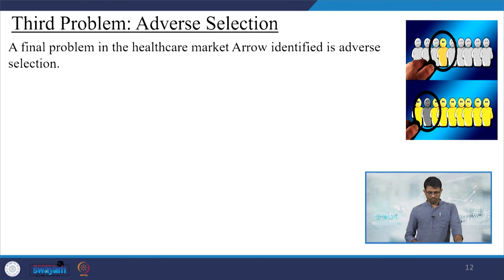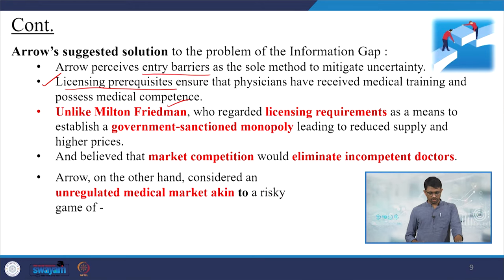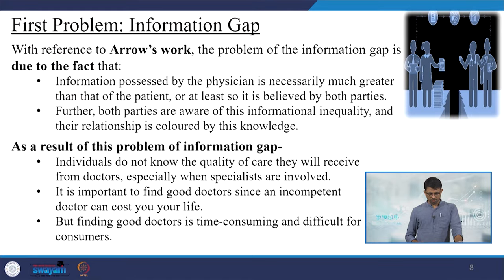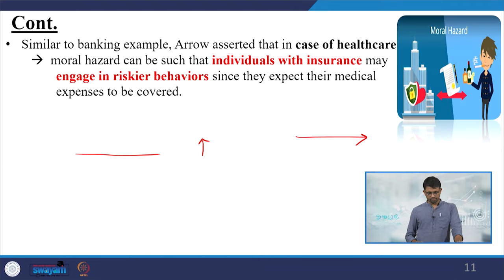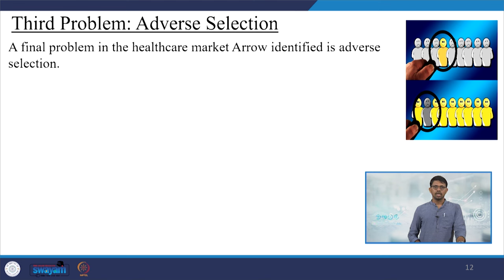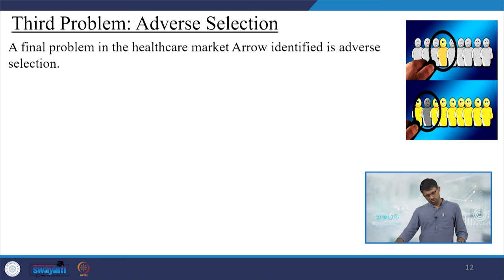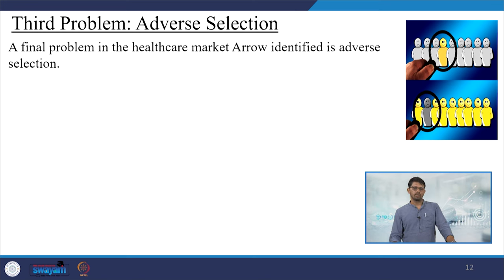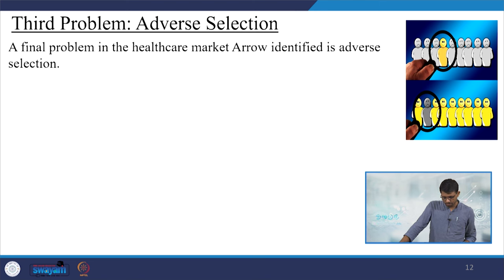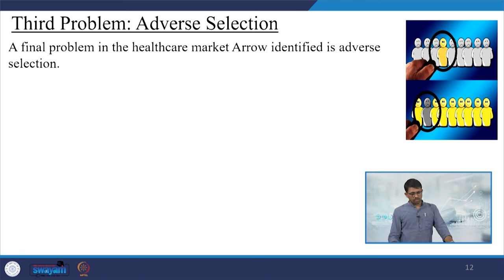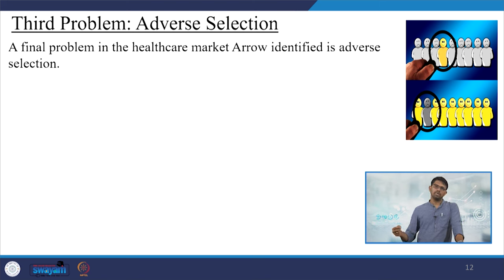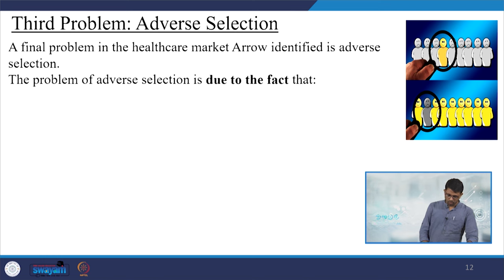The third problem Arrow identified — after information gap and moral hazard — is called adverse selection. Adverse selection, moral hazard, and information gap are all connected. Market failure, which is explained in various microeconomics books — including Hal Varian's introductory and advanced microeconomics texts — includes a specific chapter on adverse selection. Adverse selection is a result of both information gap and moral hazard, and these combined lead to problems of market failure.